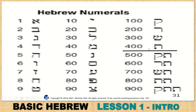Remember there are five letters at the end of a word that have a different shape — this is where they applied additional numbers. You can use them for 500, 600, 700, 800, and 900.